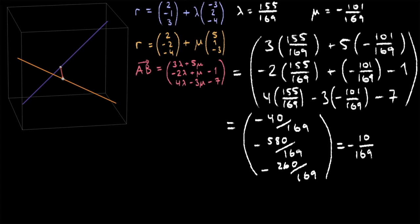I'm going to take out minus 10 over 169, because that's a common factor, and it's just going to make things a lot simpler when we're doing Pythagorean theorem.